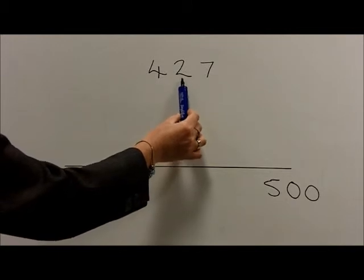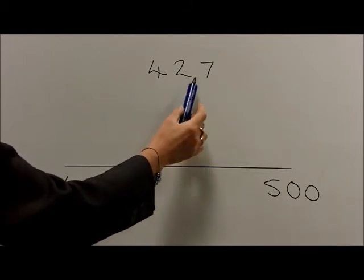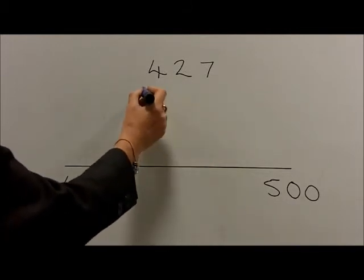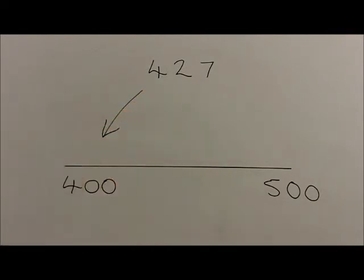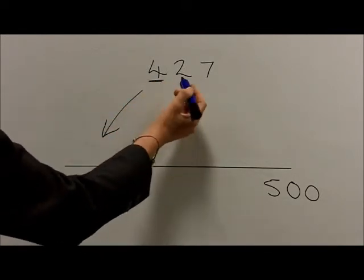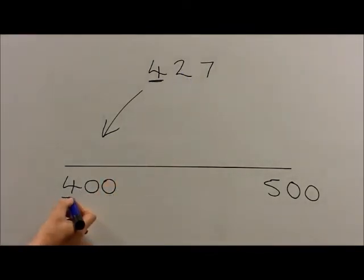In this case, because the digit is a 2, 427 will round down and therefore rounds down to 400. Notice that the digit to the left of the tens is kept when the number is rounded down.